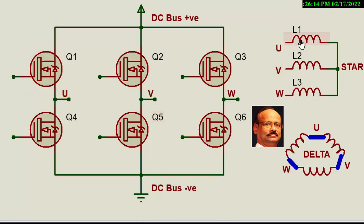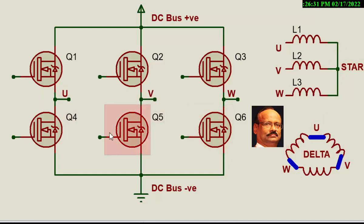From U, it could go either through a star connection or a delta connection. From U it goes to V in the star method, or U to V in the delta method. And simultaneously, this switch is also triggered — while this one is on, this is also on. So the current starts flowing this way, comes here, comes here, and then the circuit closes.